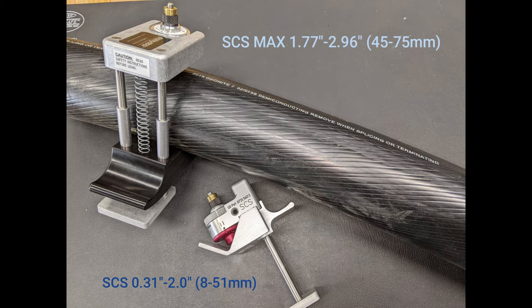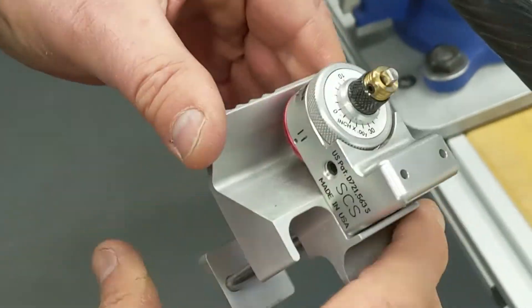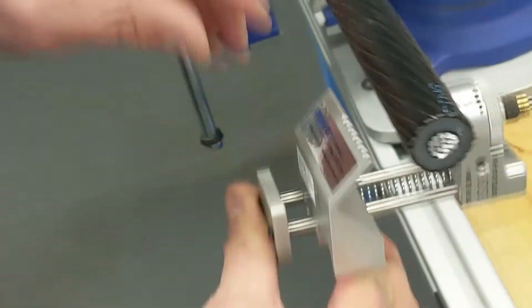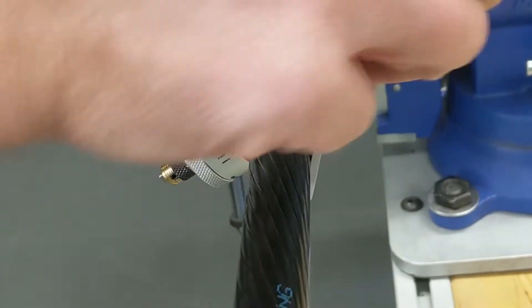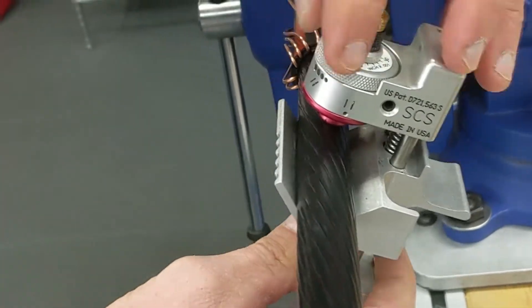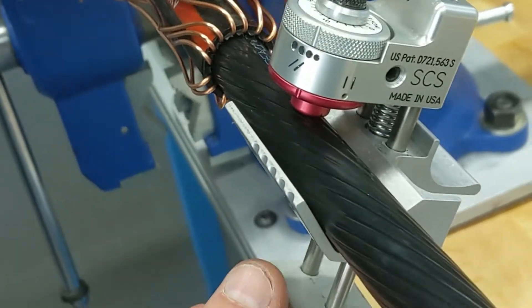Today we're going to focus on the standard SCS, but the SCS Max operates the same way. To operate the SCS, dial in the blade height based on the semicon thickness you're working with. Set the tool to the ring cut position and load the tool over the cable. It can be mid-span loaded and doesn't need to be slid over the end.